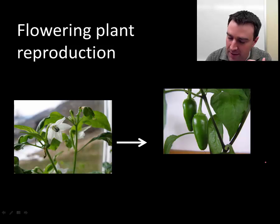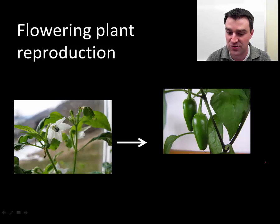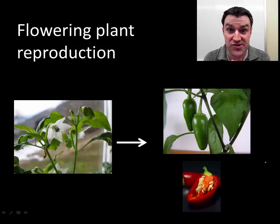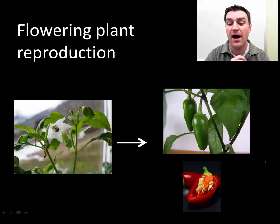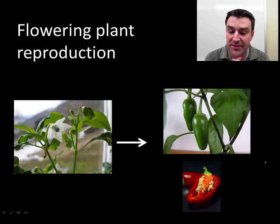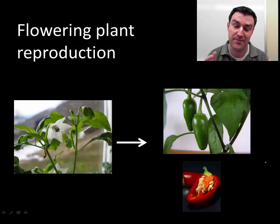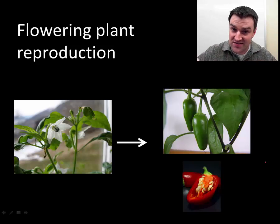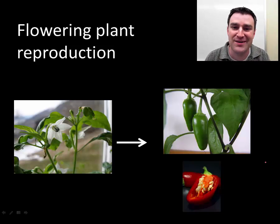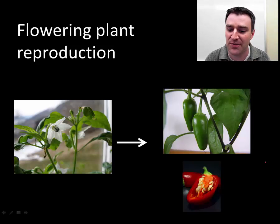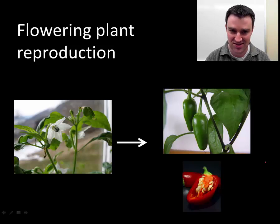With fruits, the broadest biological definition is any structure that helps get seeds dispersed — and the seeds contain the offspring inside. A very common way for plants to get their offspring seeds far away is to produce an edible structure and advertise with a color change that they're ready for animals to eat. Animals eat the fruits, get nutrition and calories from them, and perhaps even eat the seeds, which can survive the digestive system and be deposited somewhere else when the animal defecates.